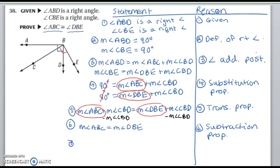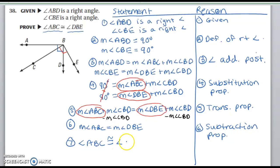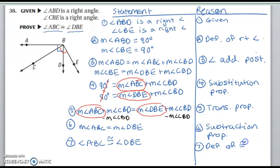The last step is to switch to congruence. Angle ABC is congruent to angle DBE, using the definition of congruence. And we're done.